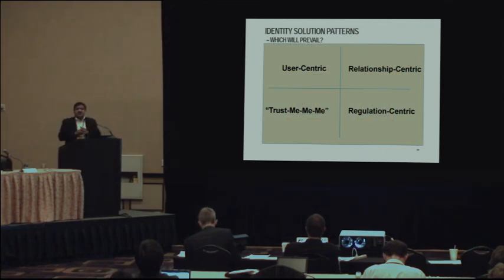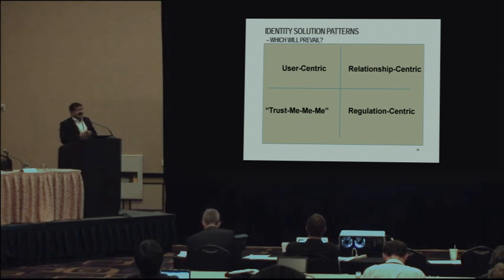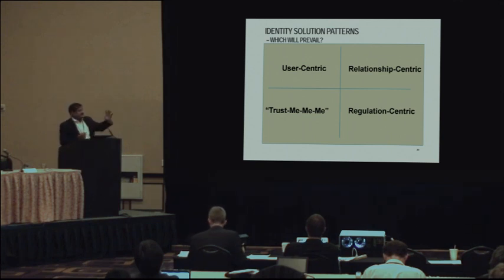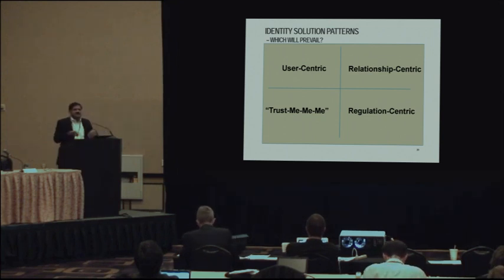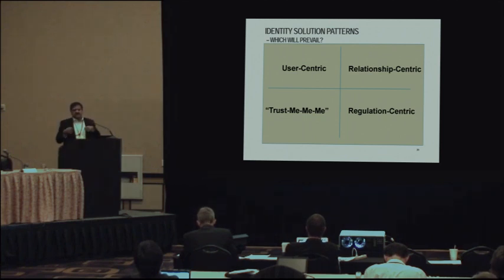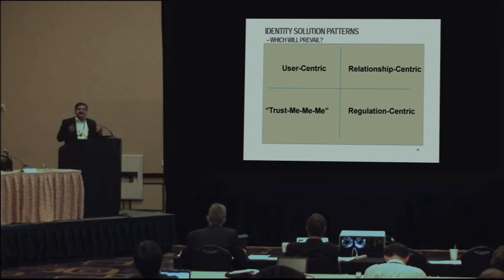There are many ways the identity pyramid might work. Some believe the world will evolve around user-centric identity — people taking charge, buying tokens, managing their own relationships. Others say end users are lazy and will maintain maybe five to ten primary relationships — with their carrier, bank, or email provider — and everybody else lines up behind them. There are regulation-centric views as well. The point is there will be different stripes for different folks, and if you design a base standard in this area, it's got to work for all of these — and what we've designed certainly does.